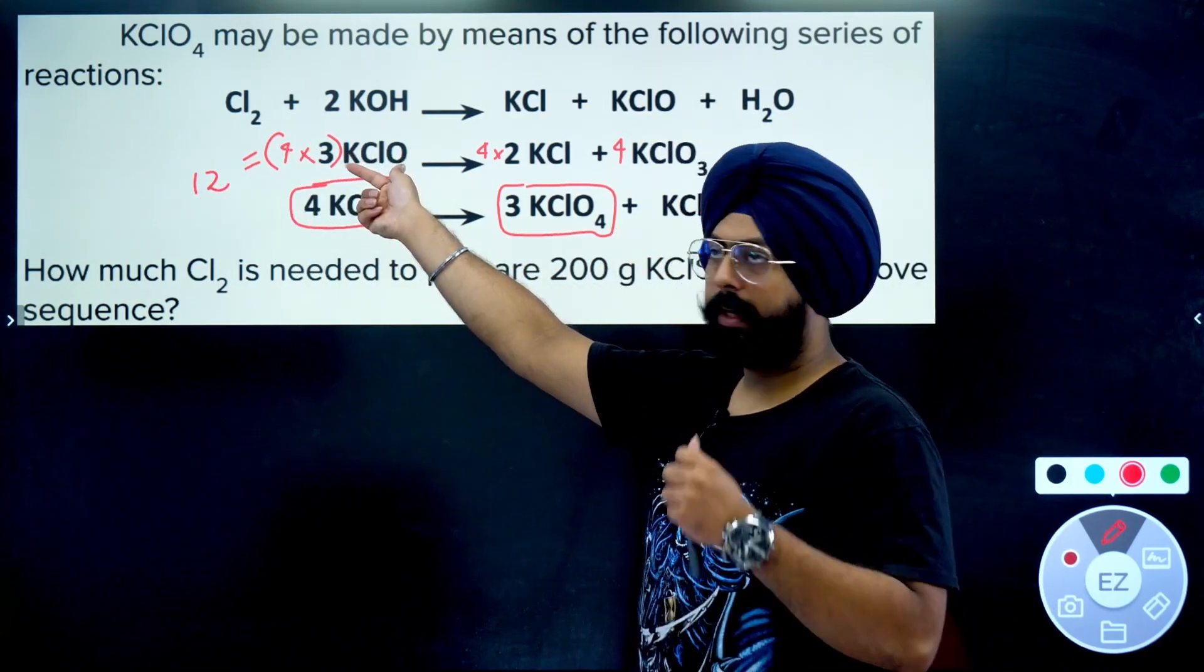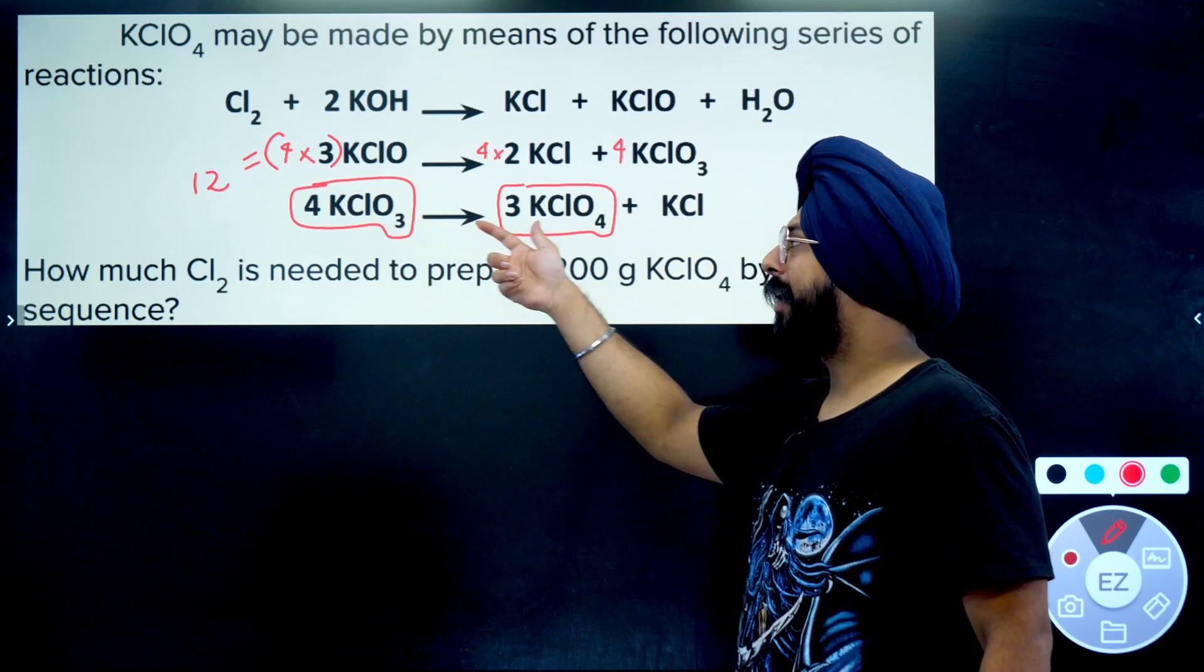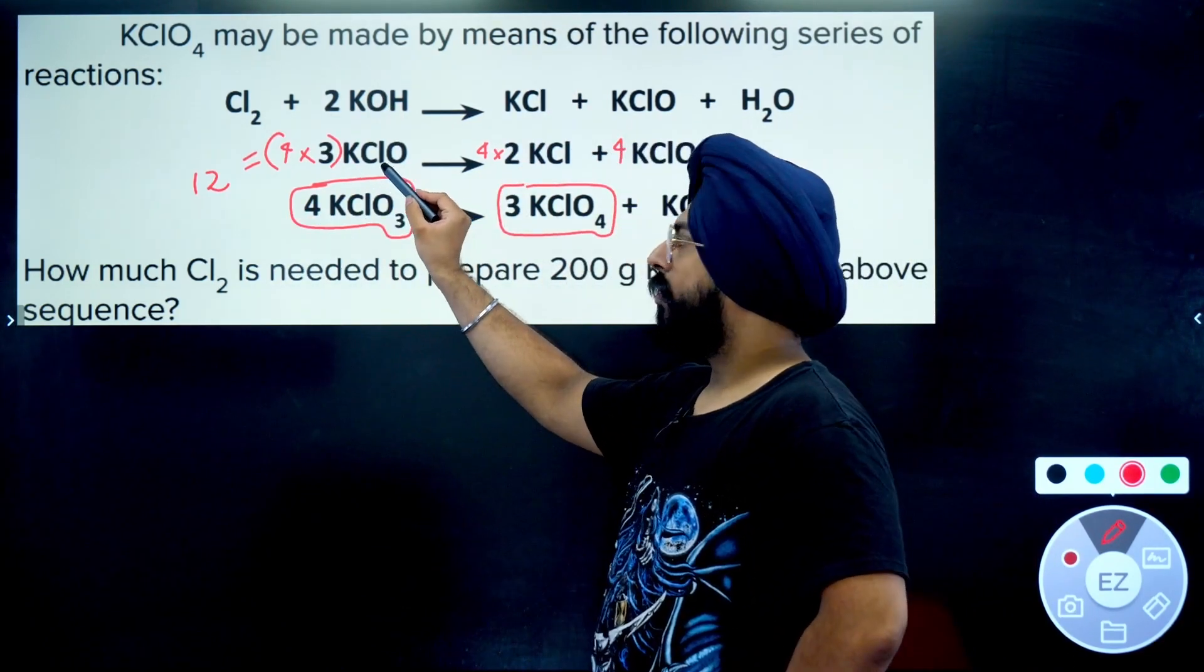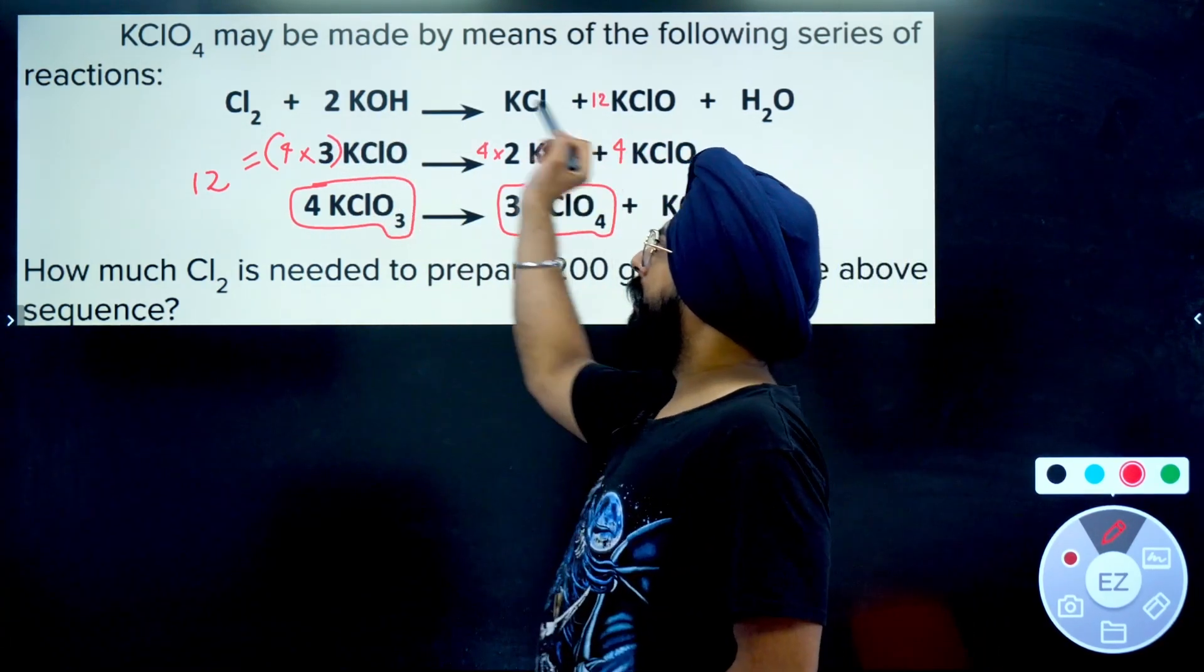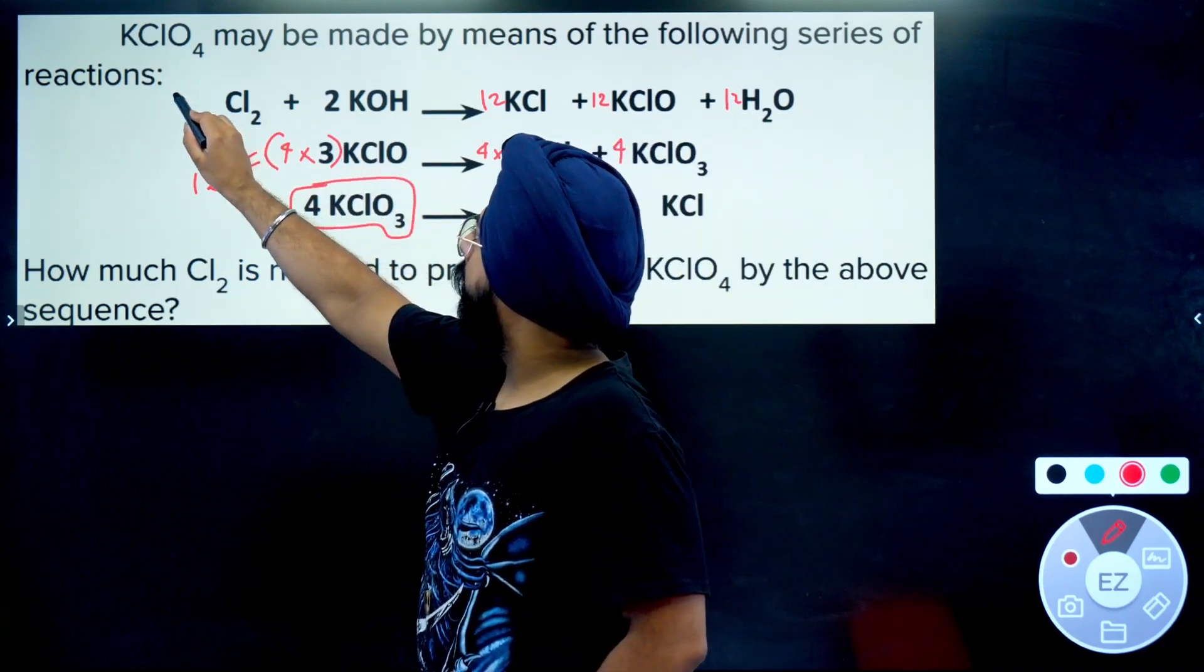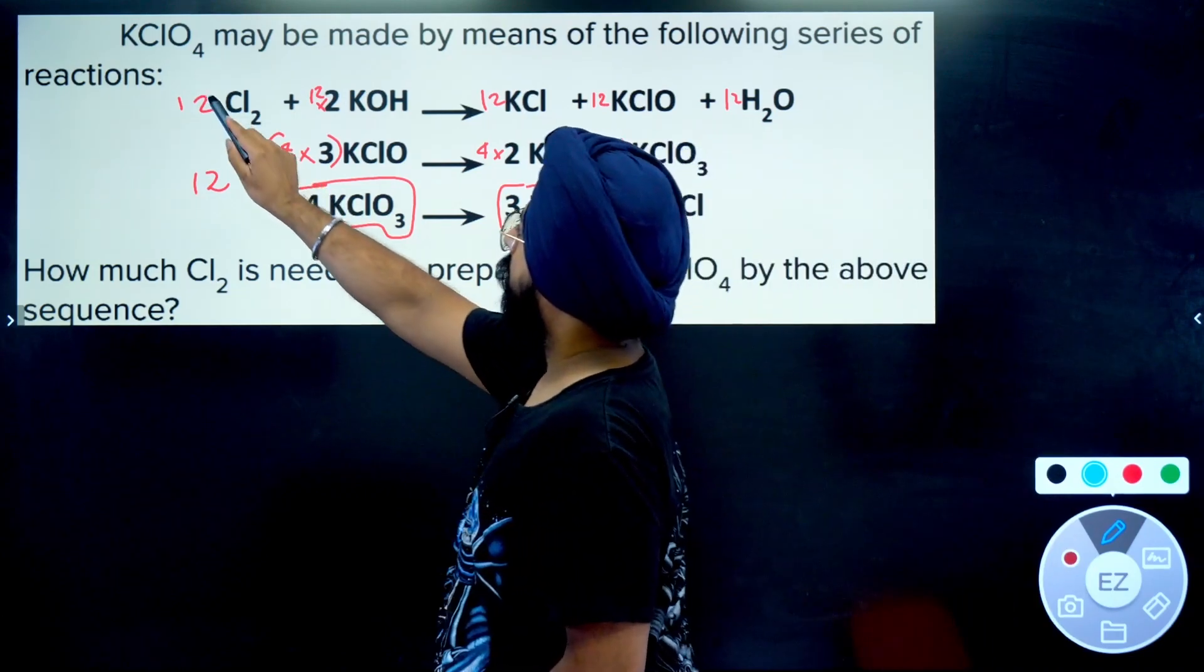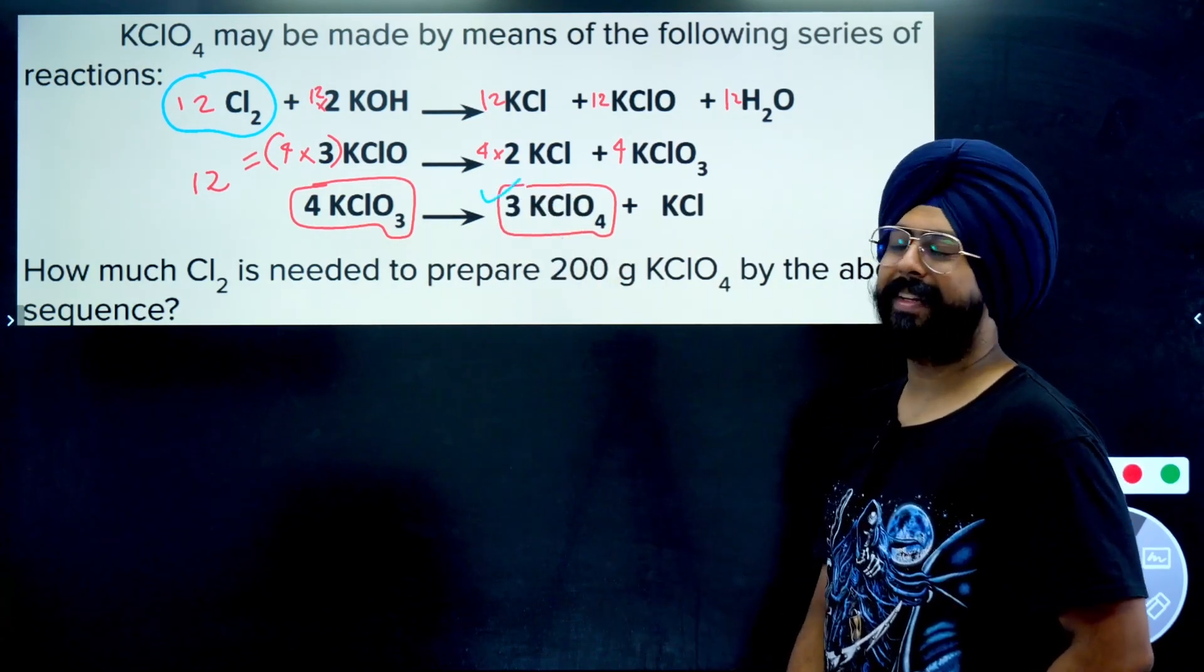So 12 moles of KClO are required to get towards 4 moles of KClO₃. Getting the idea? If I start with 12 moles of KClO, I will end up with 4 moles of KClO₃, all of which will be required to create 3 moles of KClO₄. Now similarly, let's take this upstairs. I need 12 moles of KClO. All of the KClO is being produced by this reaction. So if I have to get 12 moles of KClO, I got to multiply the entire reaction with the number 12.